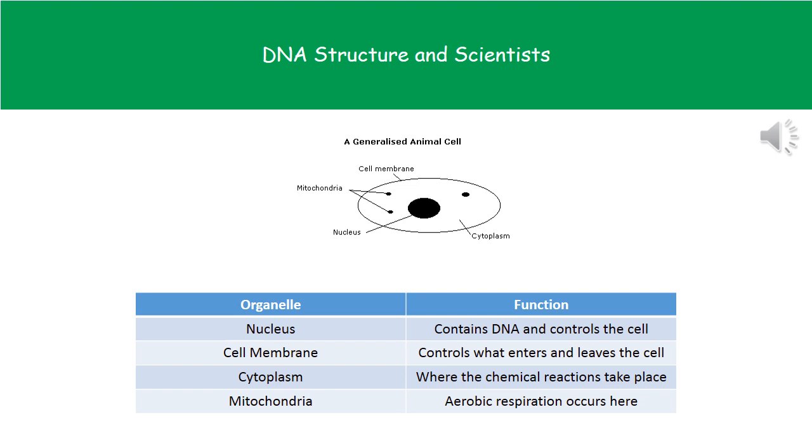First, we need to remember the actual structure of a general animal cell. This is something you would have looked at all the way back in year 7, but it's good to go over it to make sure that you can identify all of those parts. First of all, around the very outside we've got the cell membrane, which is contained within the cell membrane.